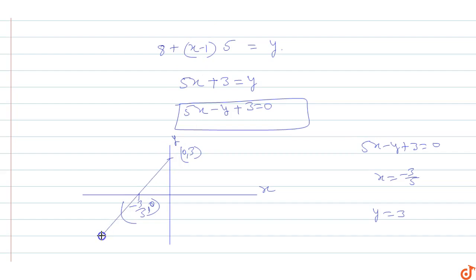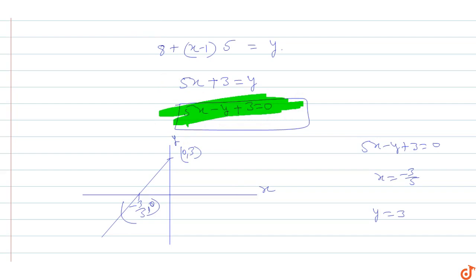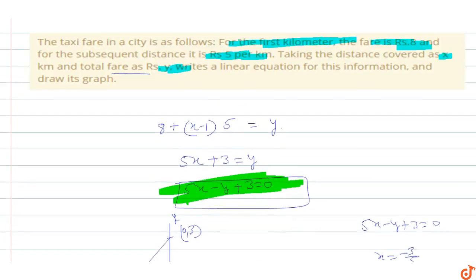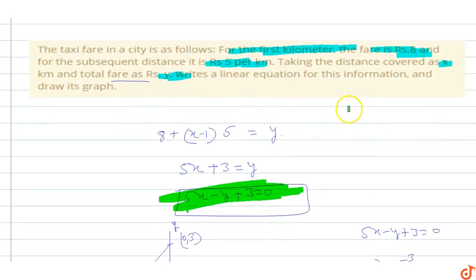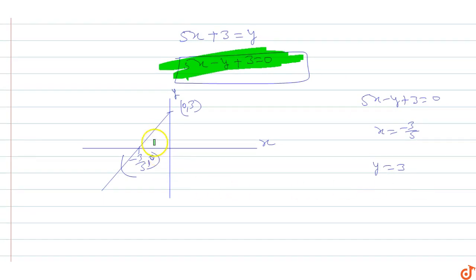So basically we form the linear equation and draw its graph. This is the graph of the linear equation 5x minus y plus 3 equals to zero, and this is the linear equation.